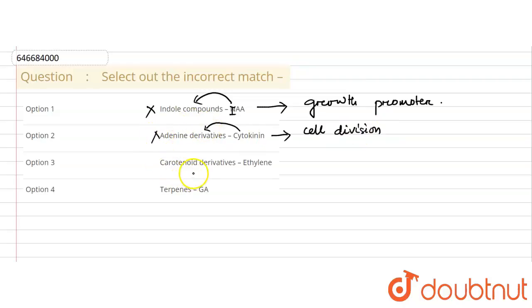In option 3, ethylene is listed as a carotenoid derivative, which is completely mismatched because ethylene is a terpene derivative.